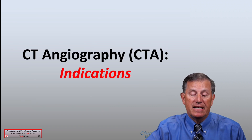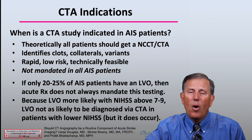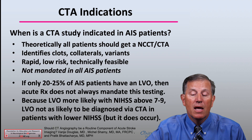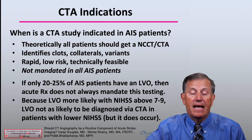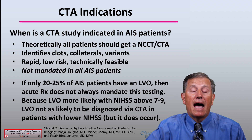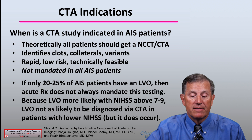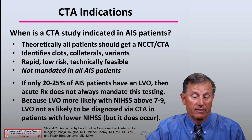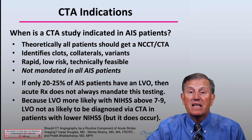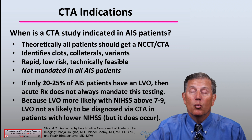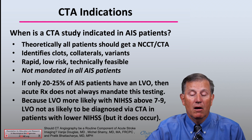What are the indications for CT angiography? When is a CTA study indicated in acute ischemic stroke patients? Theoretically, all patients should get a non-contrast CT and a CTA. Why? The CTA identifies clots, collaterals, and vascular variants. It can be done rapidly, it is relatively low risk, and it's technically feasible simply with the injection of the contrast. However, it is not mandated in all patients and we'll talk more about this at the end of our lecture today.